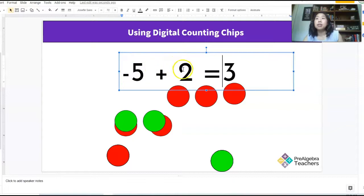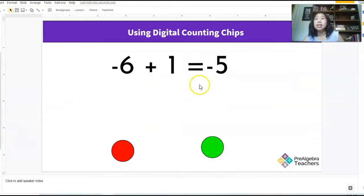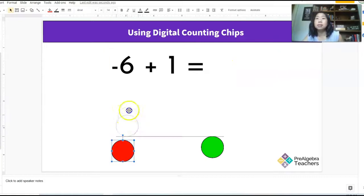And it looks like my answer is going to end up with the same sign as the number with the higher absolute value. So if I look at negative five, the absolute value is five. If I look at positive two, the absolute value is positive two. Five is bigger than two. Since five is negative, my answer is negative.